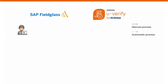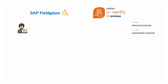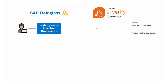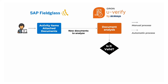When a document is attached to an onboarding activity, U-Verify replicates it and sends it through a validation process. Then OCR and artificial intelligence recognize whether it is the right document and identify any discrepancies defined by the client.